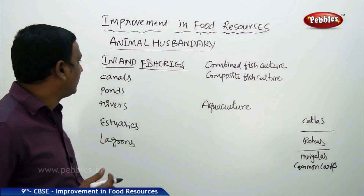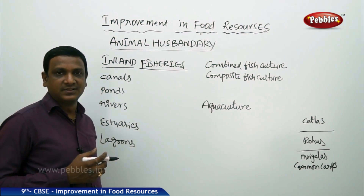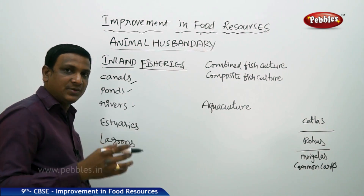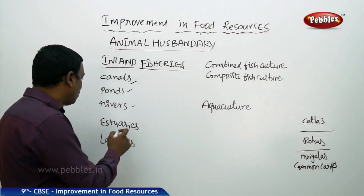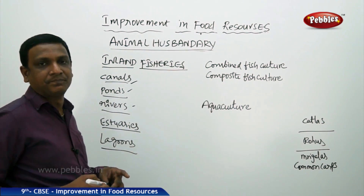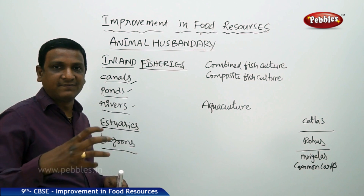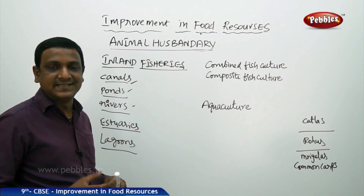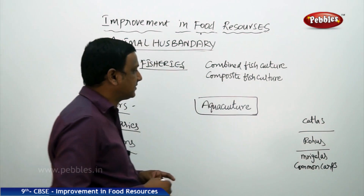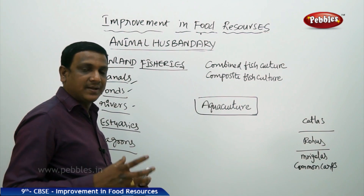Now let us look at inland fisheries. The resources of freshwater fish include canals, ponds, rivers, and reservoirs. Where seawater and freshwater mix, these are called estuaries and lagoons — all places where plenty of freshwater fish are found. Since capturing freshwater fish is not sufficient to meet demand, people started culturing fish and prawns, which is called aquaculture.